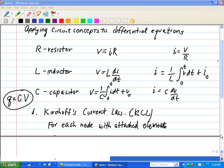So now that we have our circuit elements, our resistor, inductor, and capacitor, let's look at how we connect them and see what the constraints are.